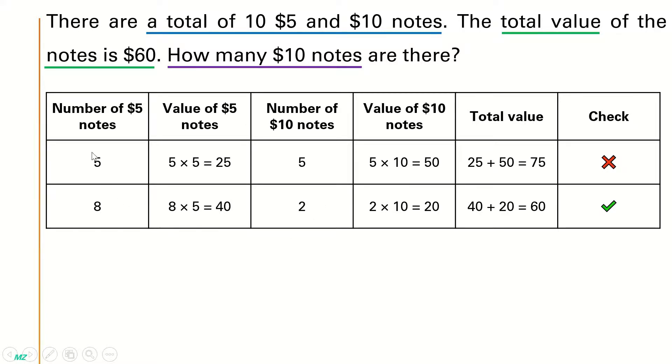So 5 plus 3, we get 8. And minus 3 from 5, we get 2. 8 multiplied by $5, we get $40. And 2 multiplied by $10, we get $20. So $40 plus $20, we get $60. And that is how we find the correct guess.